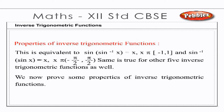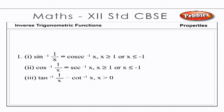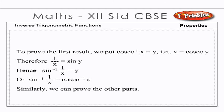We now prove some properties of inverse trigonometric functions. Property 1: sin⁻¹(1/x) = cosec⁻¹(x), for x ≥ 1 or x ≤ −1. Property 2: cos⁻¹(1/x) = sec⁻¹(x), for x ≥ 1 or x ≤ −1. Property 3: tan⁻¹(1/x) = cot⁻¹(x), for x > 0. To prove Property 1, we put cosec⁻¹(x) = y, that is x = cosec(y). Therefore 1/x = sin(y). Hence sin⁻¹(1/x) = y, or sin⁻¹(1/x) = cosec⁻¹(x). Similarly, we can prove the other parts.